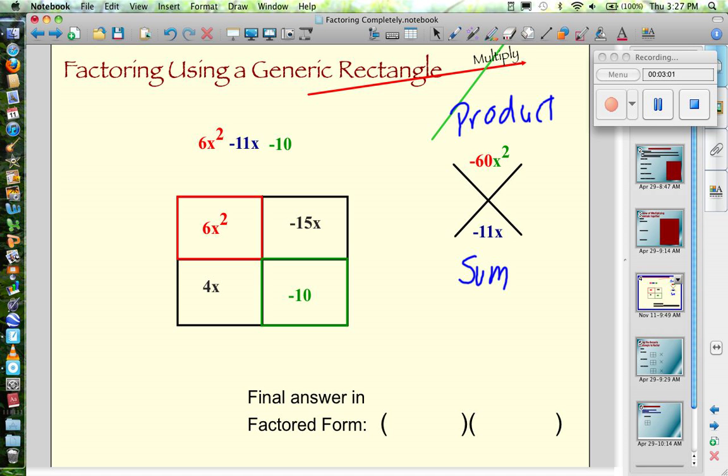So greatest common factor of 6x squared and negative 15x. First I look at the numbers, 6 and negative 15. The greatest common factor as far as numbers go is 3, because 3 goes into both 6 and 15. And then I look at my variables. They both have an x, so I can factor out an x as well.